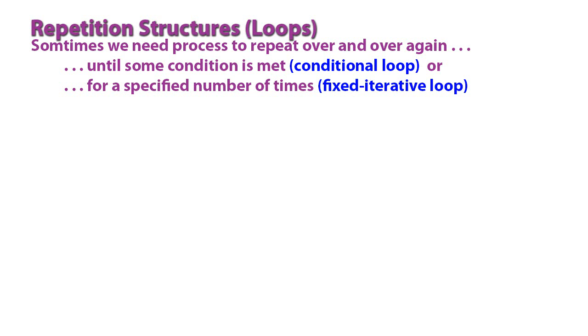There's usually two ways that we do that. One is until some condition is met. It's called a conditional loop, or a conditional repetition. Maybe we want something to repeat until the user's entered a certain number or guessed. Maybe if we're writing a guessing game, they've guessed a certain number between 1 and 100. That would be a conditional loop.